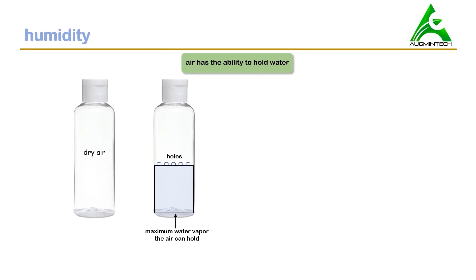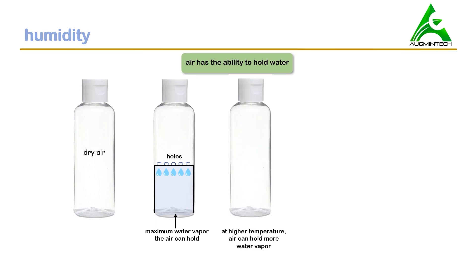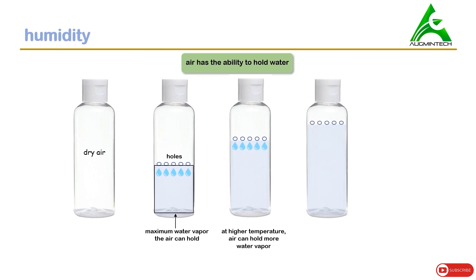Water up to the limit of the holes can be filled; after that, water will be precipitated out. In the same way, air has the ability to hold water vapor. If the water content or moisture content in the air exceeds this limit, it is precipitated out in the form of water. At higher temperatures, air can hold more water vapor, so the holes can be thought of as being at a higher position.